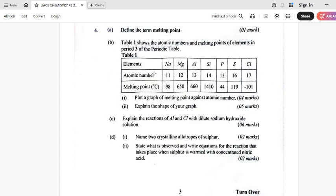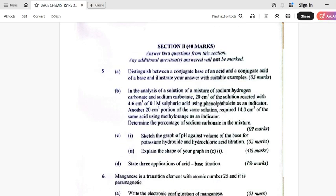Then number four is there. You are giving elements in the periodic table, hope you can see something like that. Very, very clear. Number four. Let's go to section B. Section B required to answer two questions, and any additional questions answered will not be marked.